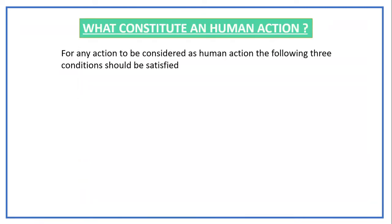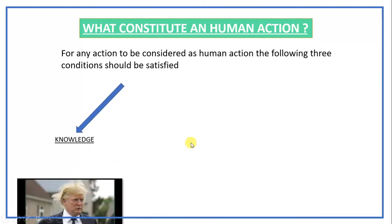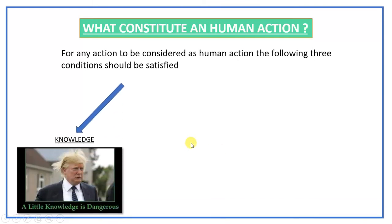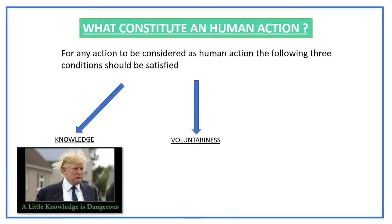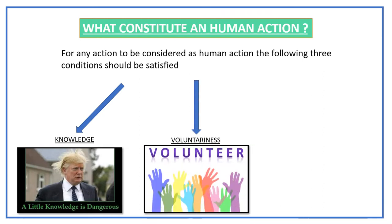There are three criteria for a human action. First: knowledge. Second: voluntariness. Third: free will.